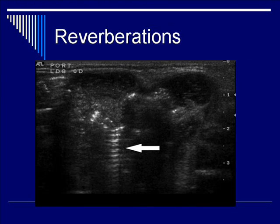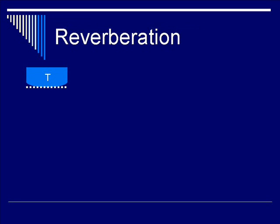We're now going to continue talking about reverberation artifact in terms of the mechanism of creating the reverberation artifact. Let's look at the illustration. You have a transducer labeled T with the surface of transducer labeled with the dotted line. You have ultrasound waves emanating in the form of pulses from the ultrasound machine towards the image of interest — in this case, a highly reflective surface or interface that will reflect the ultrasound wave back towards the transducer.